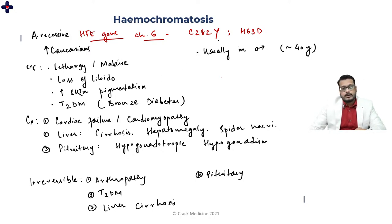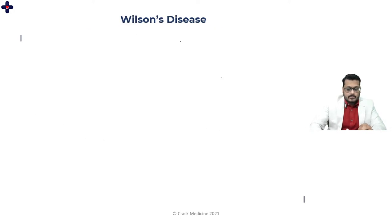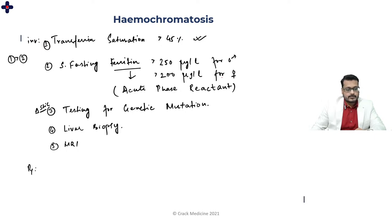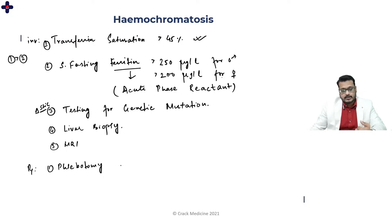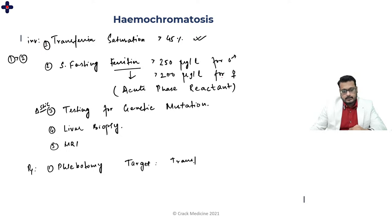For treatment, the first option is phlebotomy. Initially, when ferritin values are around 1000 micrograms per liter, the patient has phlebotomy twice per week. Once controlled to less than 50 micrograms per liter, it can be reduced to once every three months. The target for phlebotomy is transferrin saturation less than 50% and serum ferritin at a similar low value.